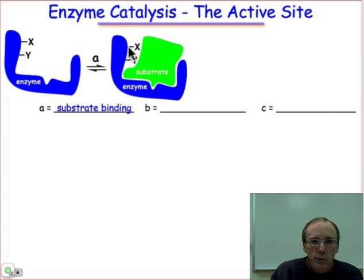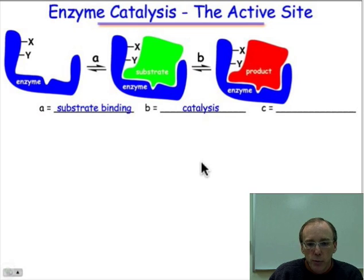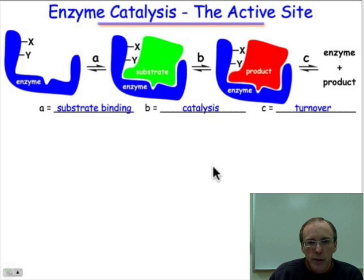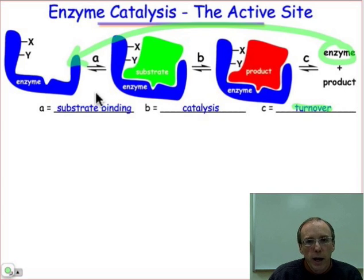Basically, the enzyme serves as a scaffold to position the side chains and to bind the substrate. The next thing that happens is catalysis — those side chains somehow get involved and convert that substrate into a product. And then the last thing that has to happen is that the product needs to be released, and that's known as turnover. Turnover is the process by which we return the enzyme to its original form, and it's ready to begin another catalytic cycle.